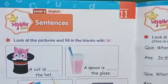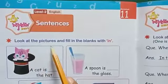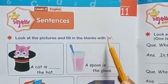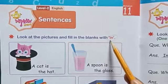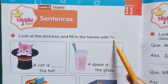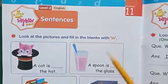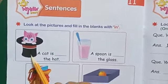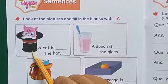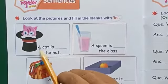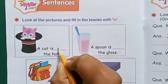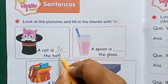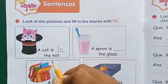Now look at the pictures and fill in the blanks with 'in'. Now look here — where is a cat? A cat is in the bed.